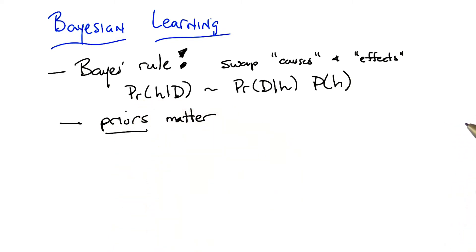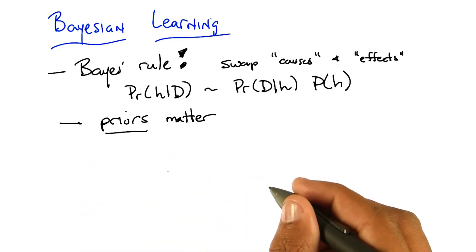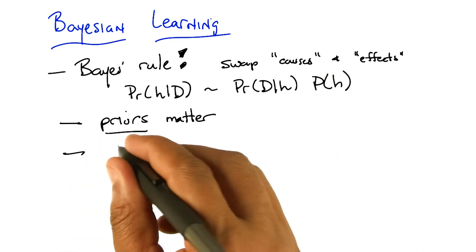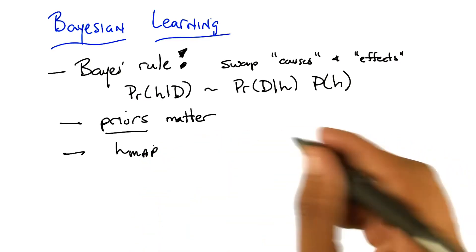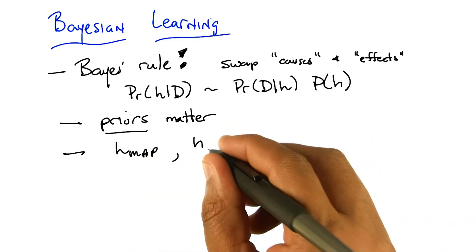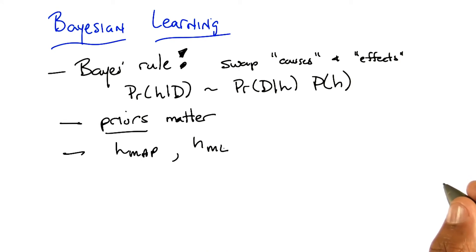Yep, we did the MAP hypothesis, maximum a posteriori. Right. We learned about HMAP, and we also learned about HML, the maximum likelihood hypothesis. Right. And what's the maximum likelihood hypothesis? How does it relate to the maximum a posteriori hypothesis? It's the MAP that you get when the prior is uniform.